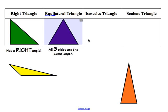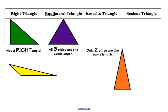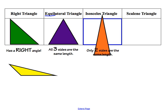Moving on to the isosceles triangle. An isosceles triangle is a triangle that has two sides the same — only two sides are the same. Looking at our yellow and orange triangles, we can see that sides one and two of this triangle are the same, so this is going to be an isosceles triangle.